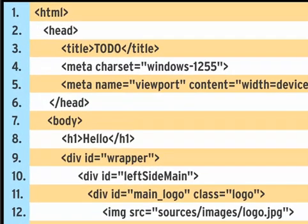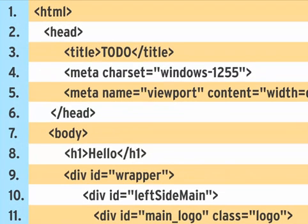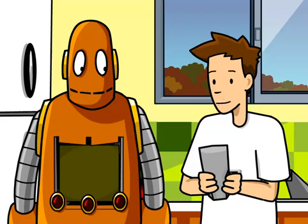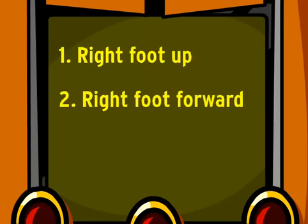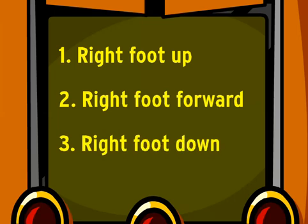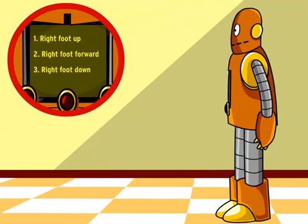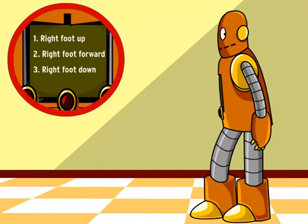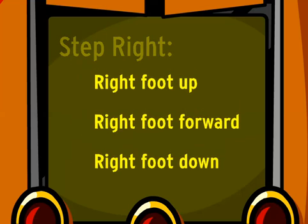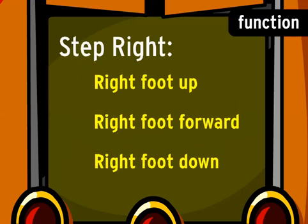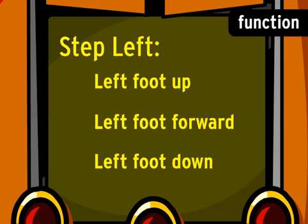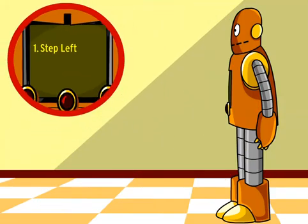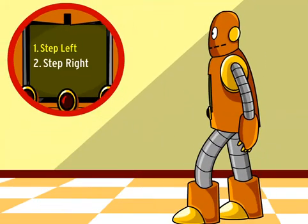That's why so many programming tools automatically number your lines of code. Let's try it. Moby, first lift your right foot, then move it ahead of your left foot, then put it down. Let's call those three lines 'step-right' and save it as a function — that's like a mini program we can call on whenever we want. Now let's make an identical step function for the left foot. Moby, step left, then step right.